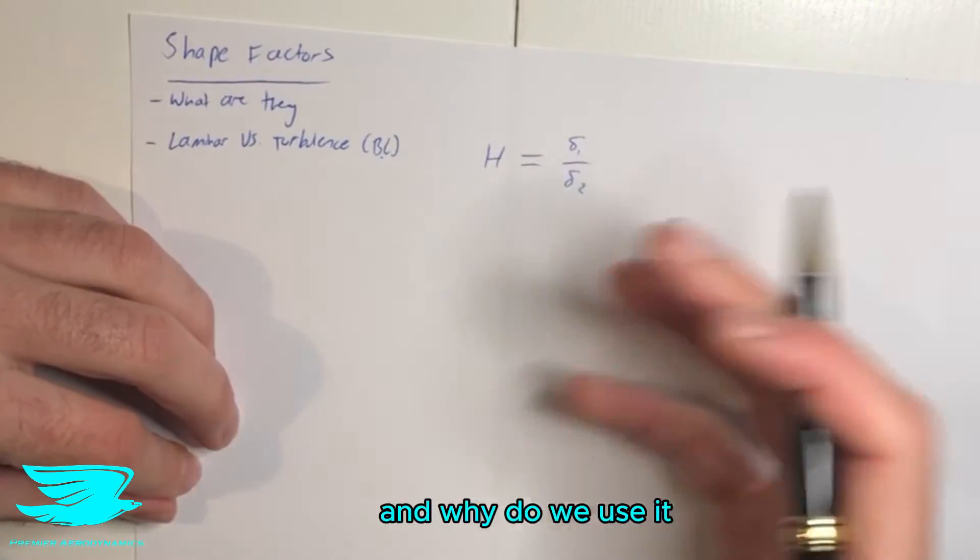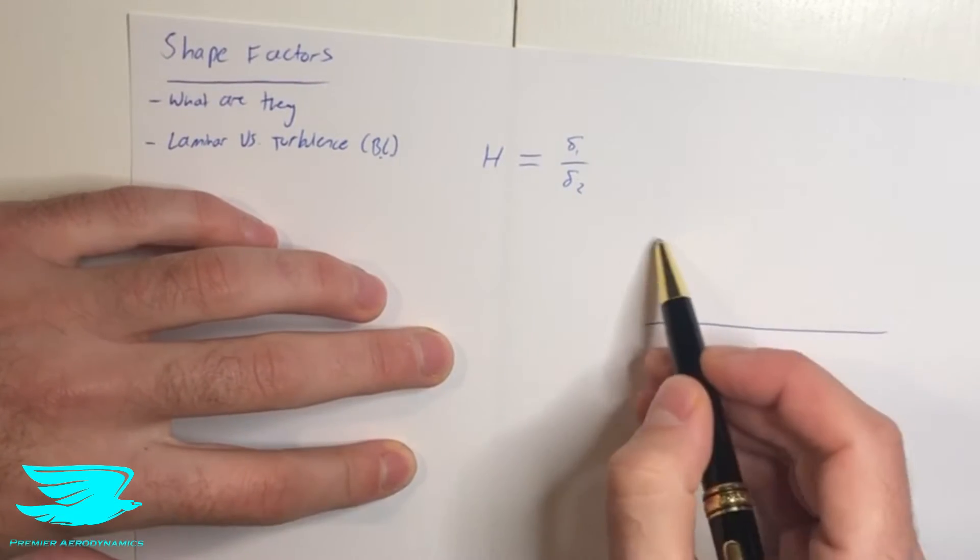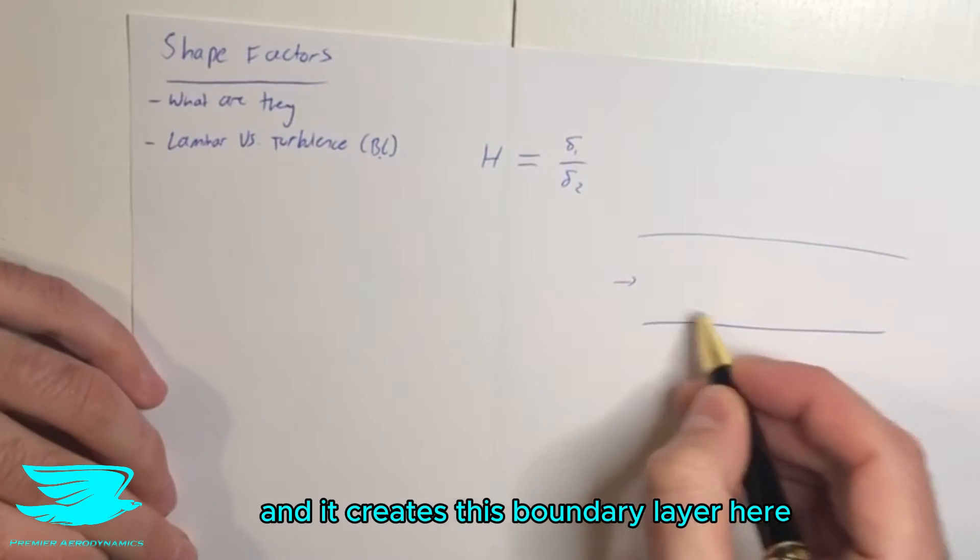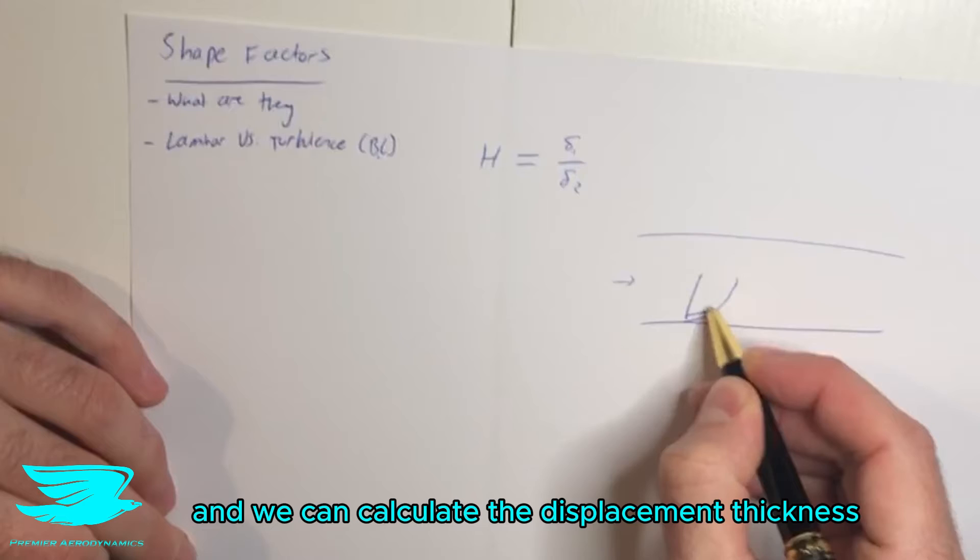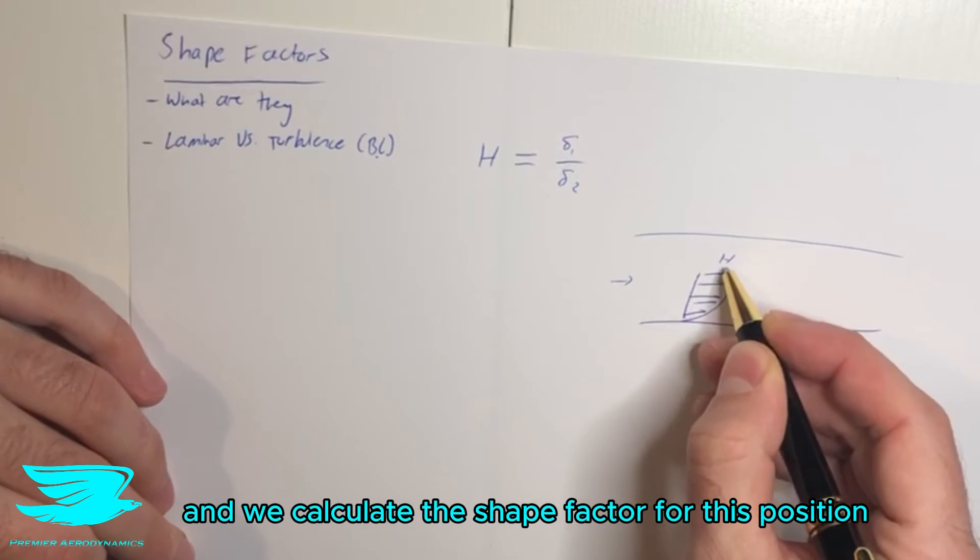So what is this, and why do we use it? Well, if we have a boundary layer in a pipe, which is called a bounded boundary layer, and the flow comes in, and it creates this boundary layer here. And we can calculate the displacement thickness and the momentum thickness, and we calculate the shape factor for this position.